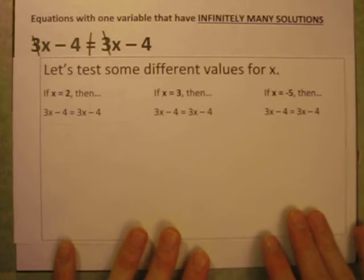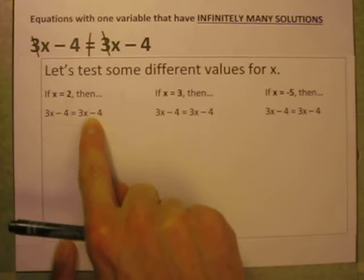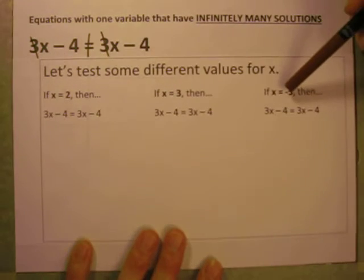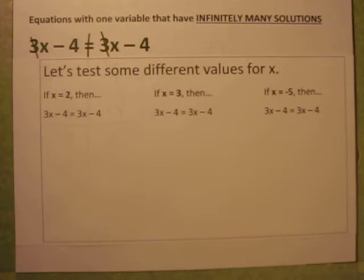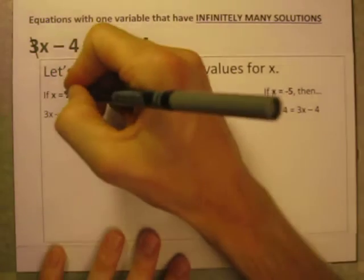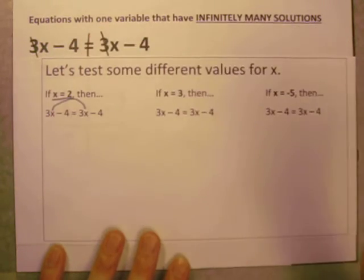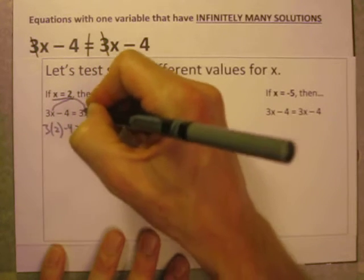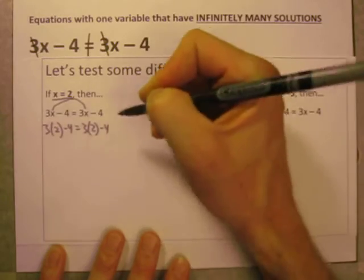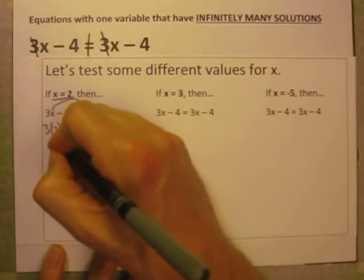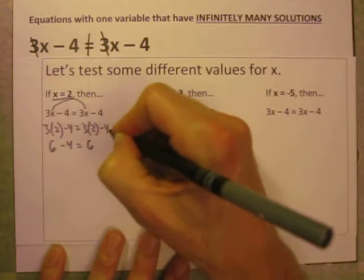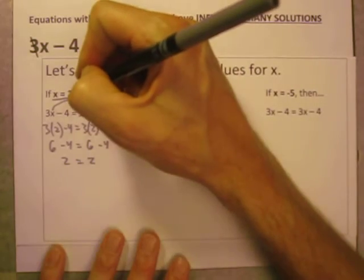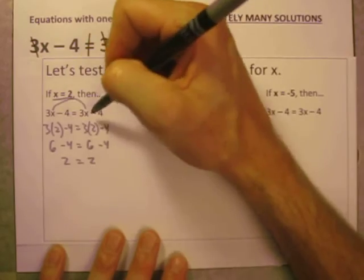Let's test some different values of X. I took that same equation, 3X minus 4 equals 3X minus 4, and repeated it 3 times. Let's see if this is true when we try X equals 2, X equals 3, and X equals negative 5. I'm going to substitute 2 in for X anywhere it appears. So instead of 3 times X minus 4, it's 3 times 2 minus 4 on both sides. 3 times 2 is 6 minus 4. 6 minus 4 is 2, equals 2. So when X equals 2, both sides of the equation are the same.